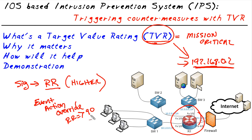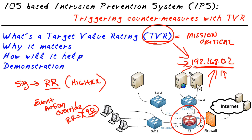I've set this up so we can see it in action. I have an event action override that says anything above a risk rating of 90 should trigger an action of deny packet inline. To start, we're going to attack a device with a SYN flood attack and see that it's working. We'll observe the actual risk rating when the device is not listed as a critical resource, then change the target value rating of that IP address, launch the same attack again, and see the risk rating increase — and as a result, the countermeasure put in place.